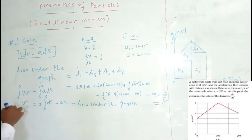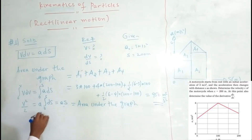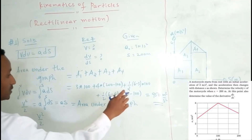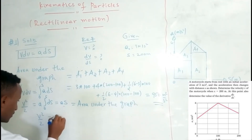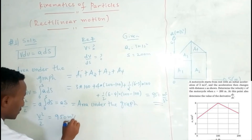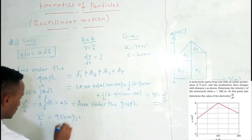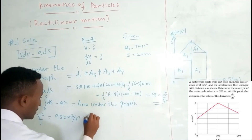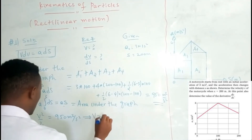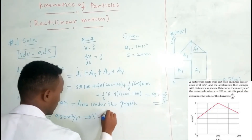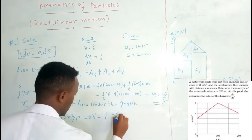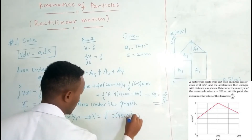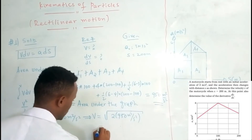We use v² = 2aS, which comes from the area under the graph. From this we can find the velocity: the result is approximately 1050 m/s squared under the root, giving the final velocity.